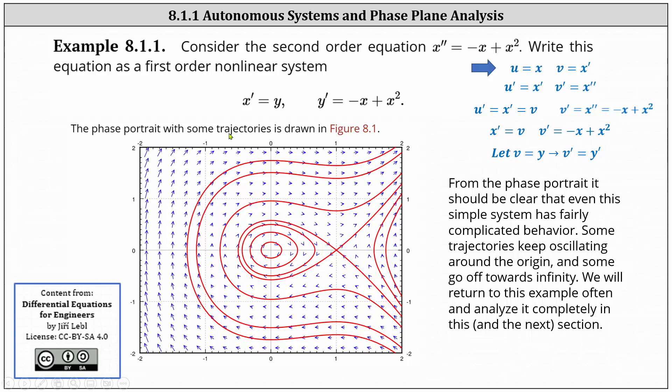The phase portrait with some trajectories is drawn in the figure below for the first order nonlinear system. From the phase portrait, it should be clear that even this simple system has fairly complicated behavior. Some trajectories keep oscillating around the origin, which we see in this region here, and some go off towards infinity. We will return to this example often and analyze it completely in this and the next section.